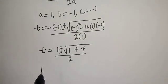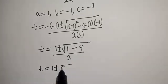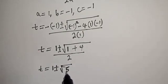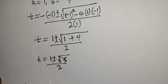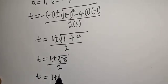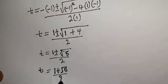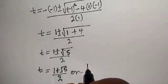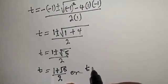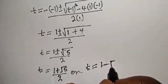Therefore t equals 1 plus square root of 5, over 2, or t equals 1 minus square root of 5, over 2.